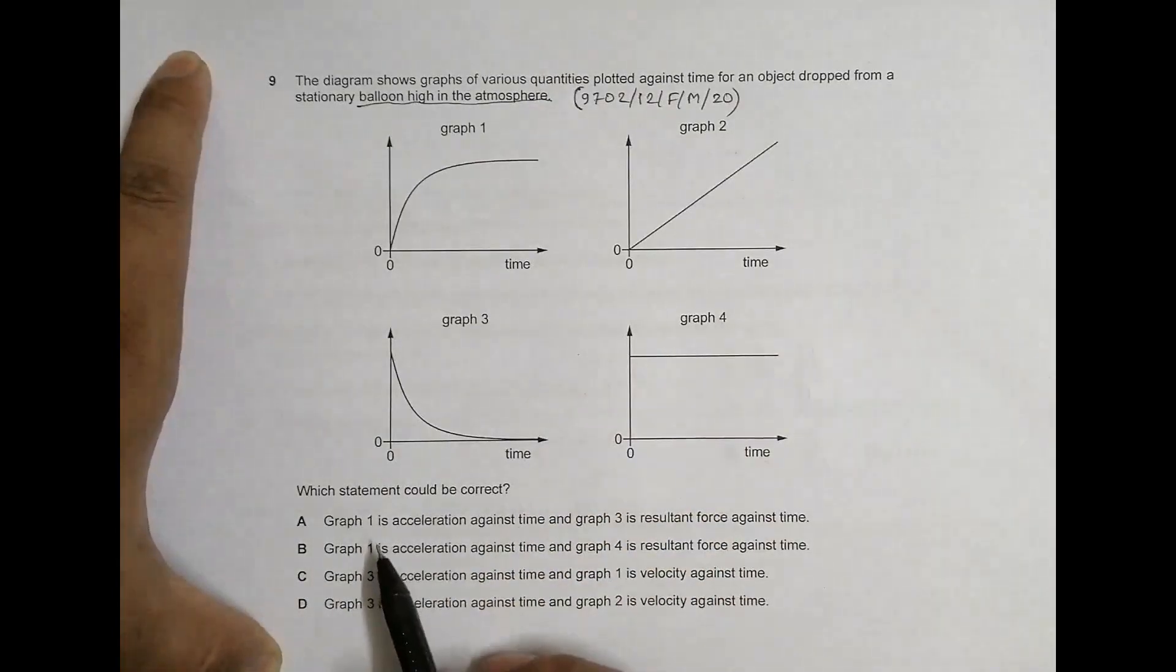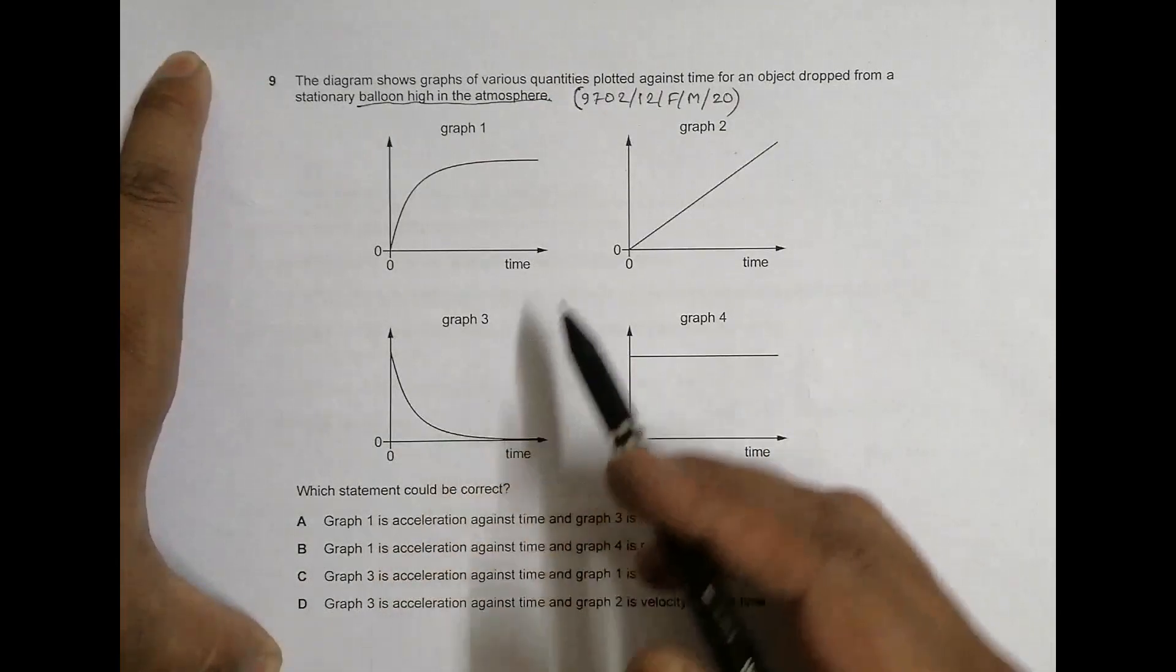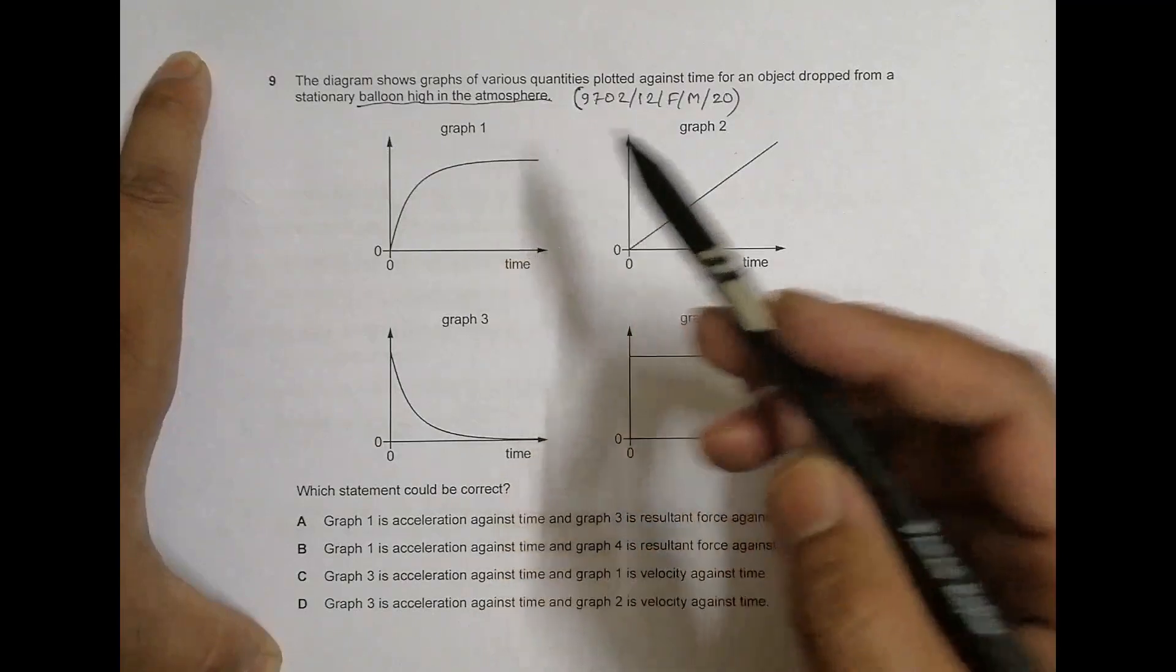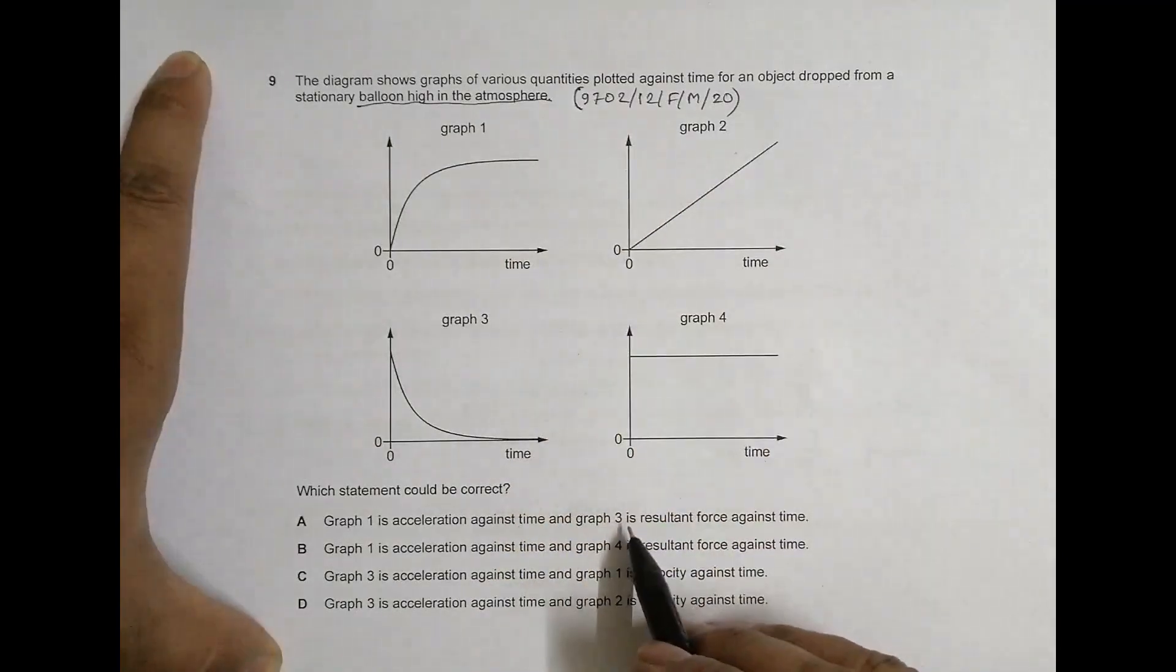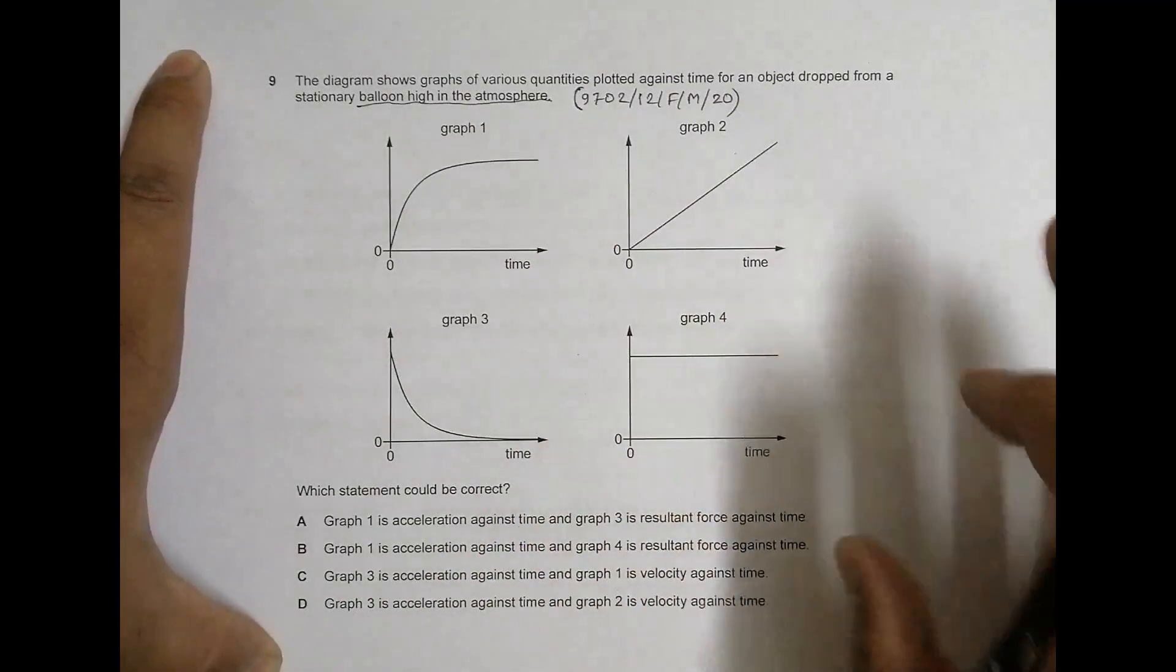The question interprets several things here. It says graph 1 is acceleration against time, graph 1 is acceleration and graph 3 is force against time, graph 4 is force against time, and so on. So let us do them.